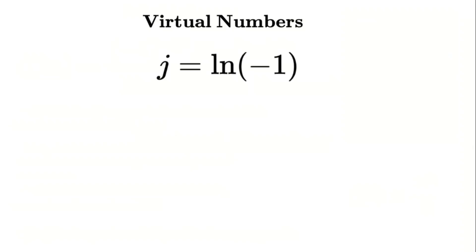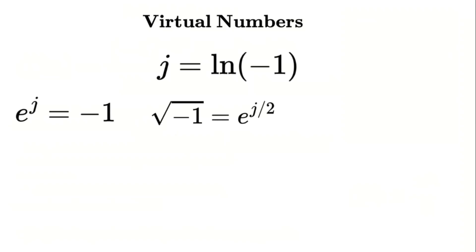From this definition, we can derive some interesting properties. First, e to the power of j equals negative 1, because e raised to the natural logarithm of negative 1 equals negative 1. Second, the imaginary unit i, which satisfies i squared equals negative 1, can be expressed as i equals e to the power of j divided by 2. Third, the constant pi can be rewritten in terms of j as pi equals j divided by i, which is the same as j divided by e to the power of j divided by 2.